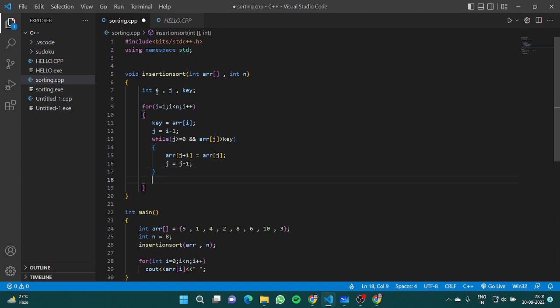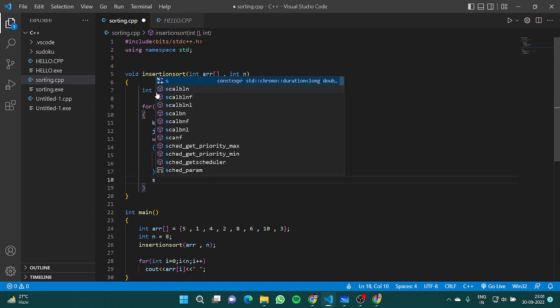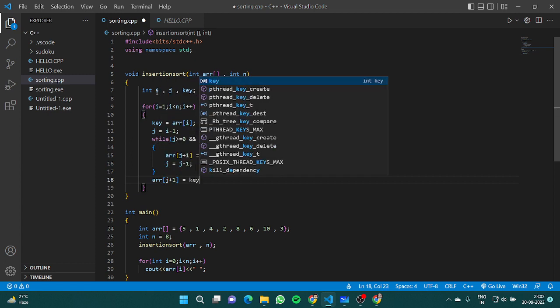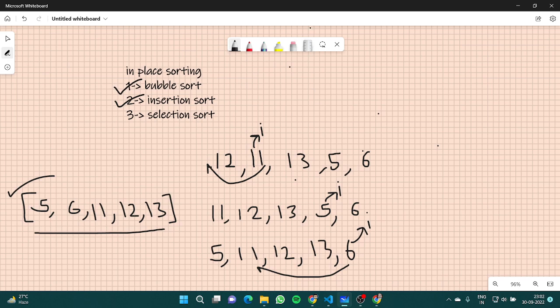And in the end we will set array[j+1] equals key. I hope that makes sense. If it does not, we will have one more thing we can see. Let's remove this part.